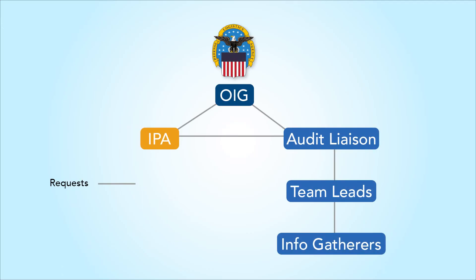The audit liaisons, team leads, and information gatherers, all in collaboration, will also be responsible for assisting in answering questions and responses from the IPA, which will be coordinated through the audit liaisons.